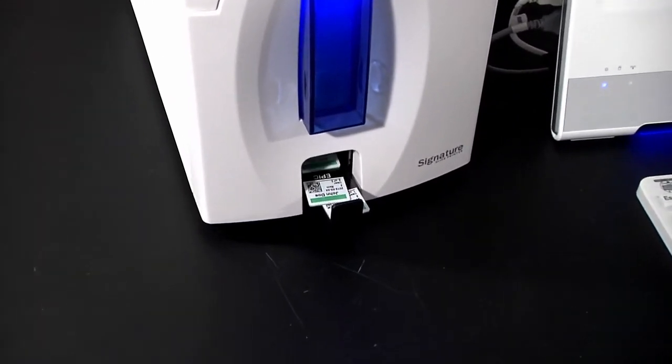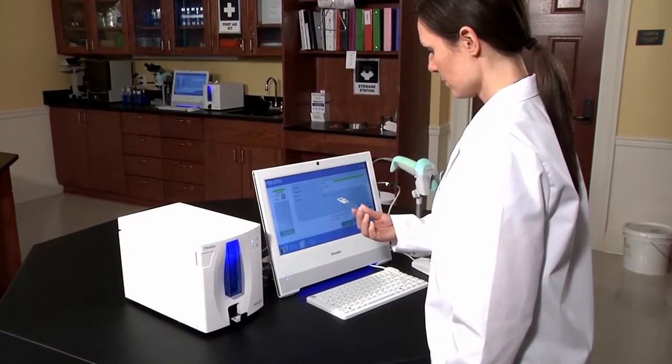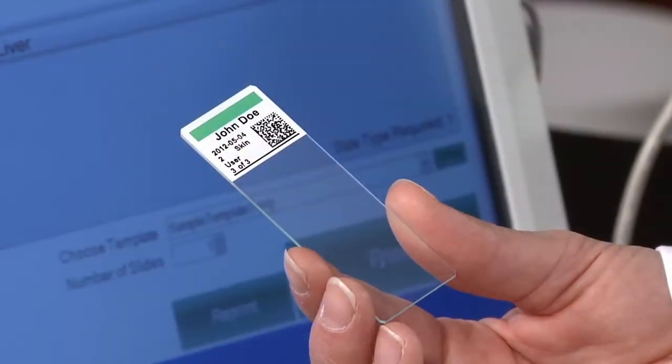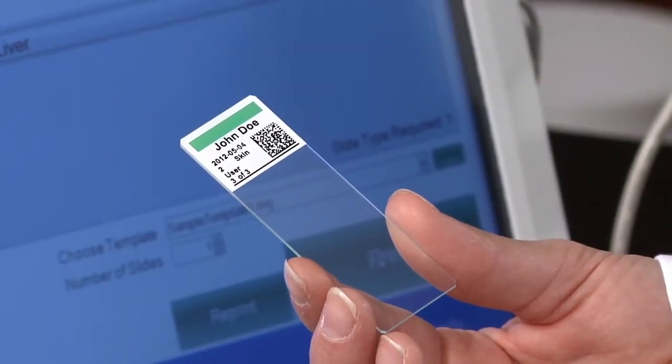With crisp and clear 300 DPI print resolution, you'll be able to print text, graphics, logos, and high resolution linear and 2D barcodes.